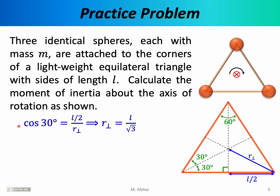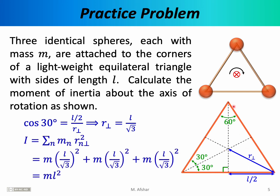Now that we know the perpendicular distance of each particle to the axis of rotation, we can calculate the moment of inertia. Since this is an equilateral triangle, the distance of each particle to the axis of rotation is exactly the same. Taking the mass and multiplying by distance squared for each mass and putting everything together, the moment of inertia of this object for this particular axis of rotation comes out to be mL².